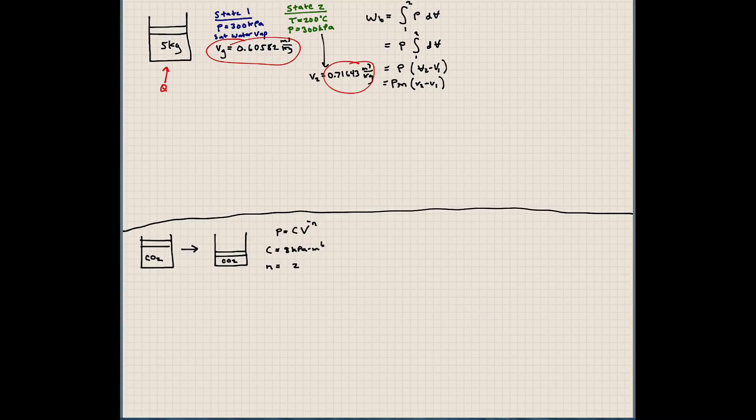All right, so now we know our specific volumes. We know the pressure is the same, so let me go ahead and write that, 300,000 times the mass of this, which is 5 kilograms, times the difference of the specific volumes here. So the specific volumes are 0.71643 minus 0.60582.